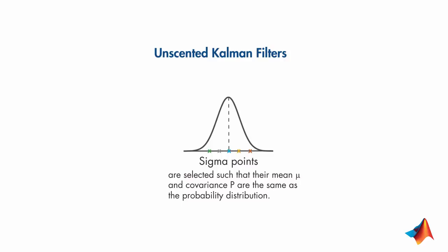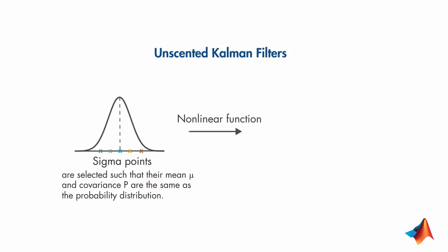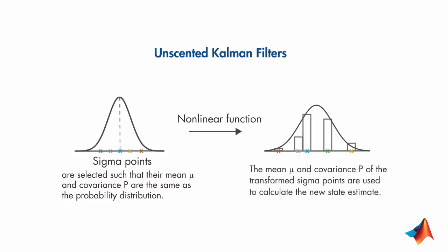These are referred to as sigma points and are symmetrically distributed around the mean. Each sigma point is then propagated through the nonlinear system model. The mean and covariance of the nonlinearly transformed points are calculated and an empirical Gaussian distribution is computed, which is then used to calculate the new state estimate.